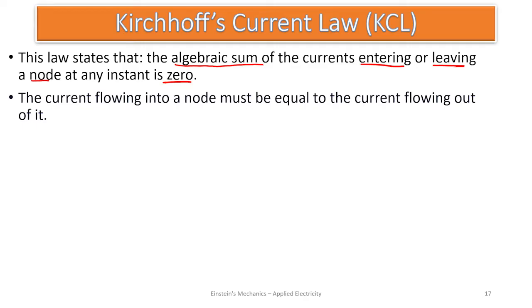The second point: the current flowing into a node must be equal to the current flowing out of it. You can understand the law this way — the algebraic sum of current entering or leaving is zero, or current entering a node is equal to current flowing out of the node. The algebraic sum of currents i at a node is equal to zero.